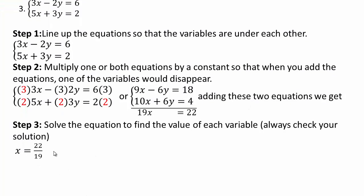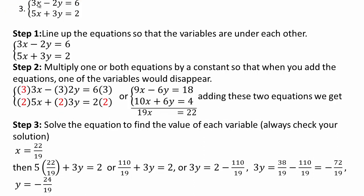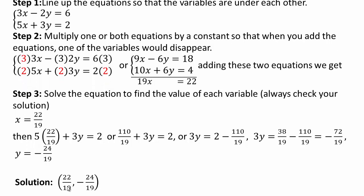Now plug that x value into one of the equations to get y. Using the second equation: 5 times (22/19) plus 3y equals 2. Multiply 5 times 22 and solve for y: 2 minus 110 over 19 gives negative 72 over 19. Divide both sides by 3 to get y equals negative 24 over 19. So the solution is x equals 22/19 and y equals negative 24/19. You can also use substitution and verify — you'll get the same answer, just more tediously.